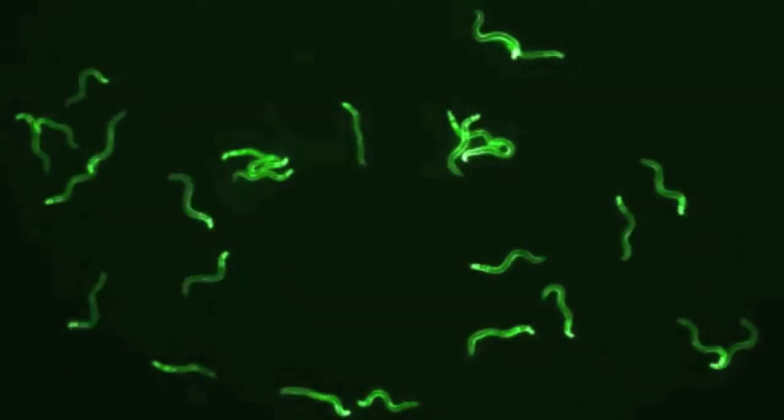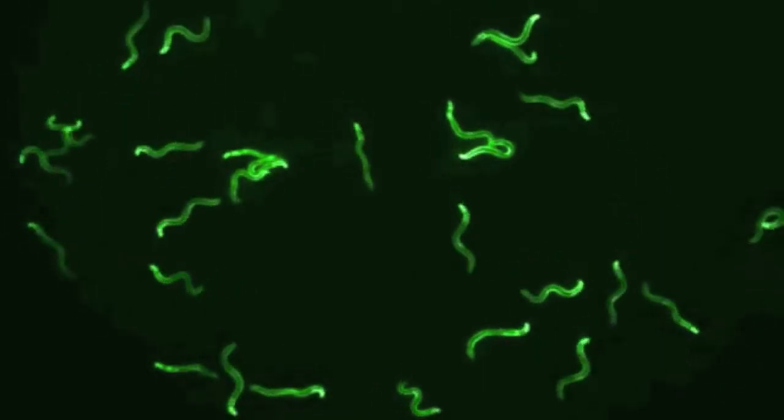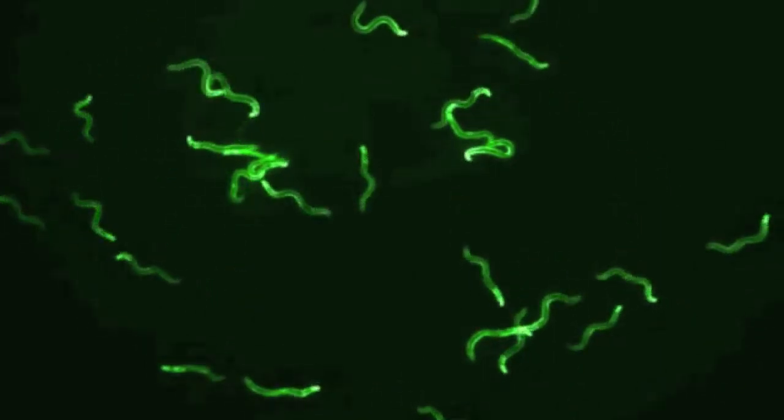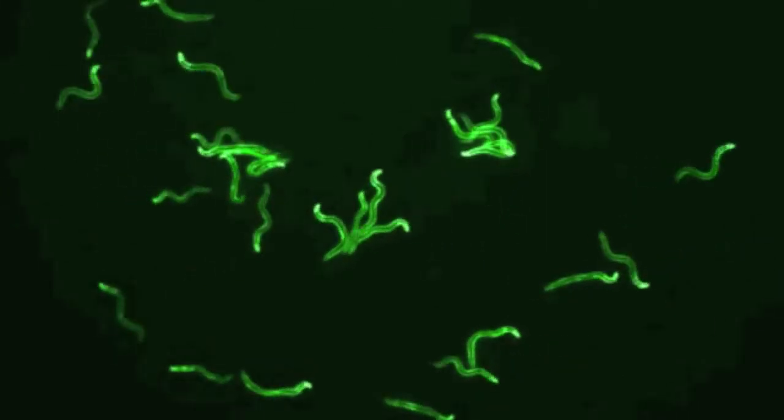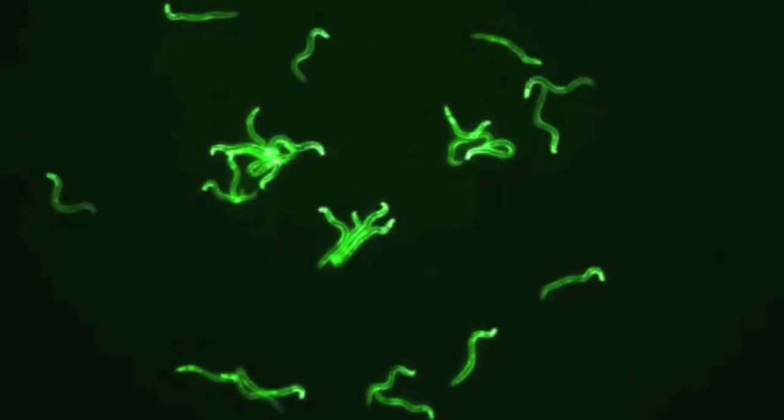Complex behaviors include learning, mating, or social behaviors. Researchers study behavior of these worms by observing how they are attracted to food and chemicals. Ultimately, behaviors reflect the activity of the nervous system.